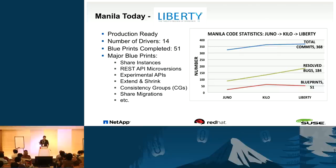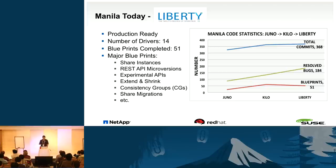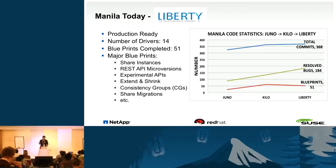Most importantly, Manila is now production ready. We have a total of 14 storage drivers available. The number of blueprints or features completed is 51 for Liberty — slightly down from Kilo, but we also fixed a number of additional bugs. The total number of bugs fixed was 184. Major blueprints completed include share instances, REST API microversions, experimental APIs, and more.